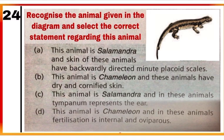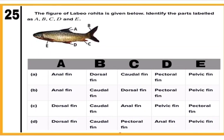Question 24: Recognize the animal given in the diagram and select the correct statement regarding it. The given animal is salamander belonging to class Amphibia. Tympanum represents the ear in amphibians — no external ear is present. Correct answer is option C. Mark C.